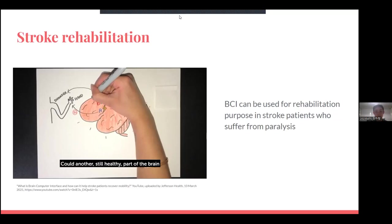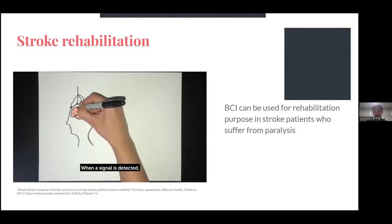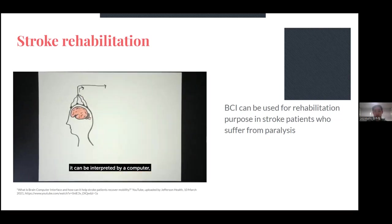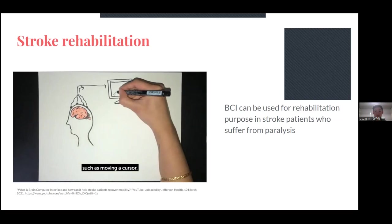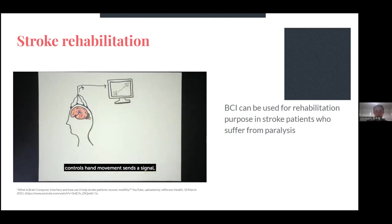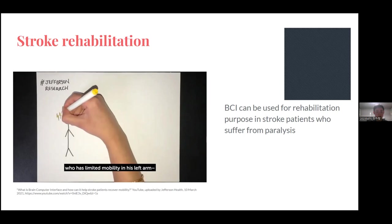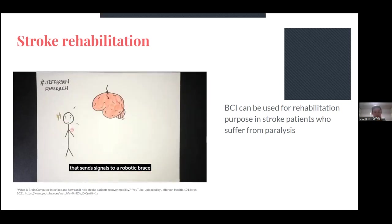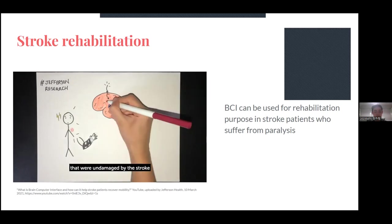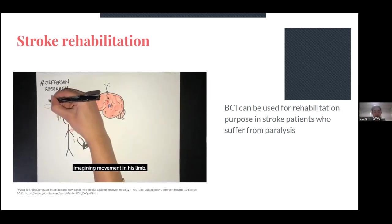The brain is very flexible, and different parts can be trained to take on new functions. Could another healthy part of the brain be trained to move that part of the body? We need to access the signals the brain sends during movement with advanced electrical sensors. When a signal is detected, it can be interpreted by a computer and converted into a command, such as moving a hand.